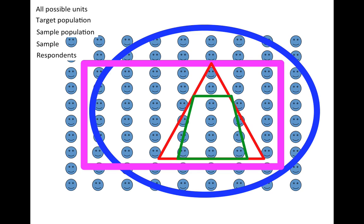So again, we have our target population of units that we're interested in studying. Our sample population is the set of units that have some chance of actually ending up in our study. The sample is the set of units selected from the sample population that we're actually going to attempt to study. And the respondents are the units who actually end up in our data set.